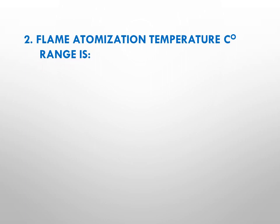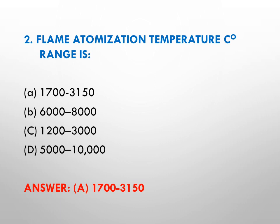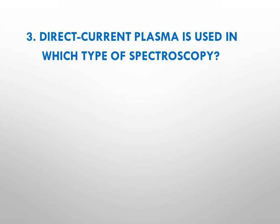Question number two: flame atomization temperature in degree centigrade range is — options: A is 1700 to 3150 degree centigrade, B is 6000 to 8000 degree centigrade, C is 1200 to 3000 degree centigrade, while D is 5000 to 10000 degree centigrade. The right answer is A, that is 1700 to 3150 degree centigrade, meaning by using flame as an atomizer we can provide heat in the range of 1700 to 3150 degrees centigrade.